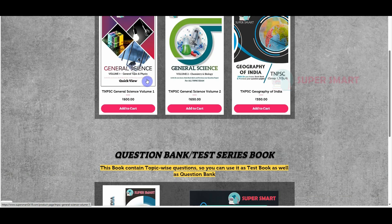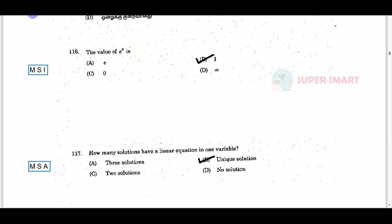So, we will continue on this video. The first question is: the value of e⁰. So, e⁰ — the value of e⁰ — this is zero.